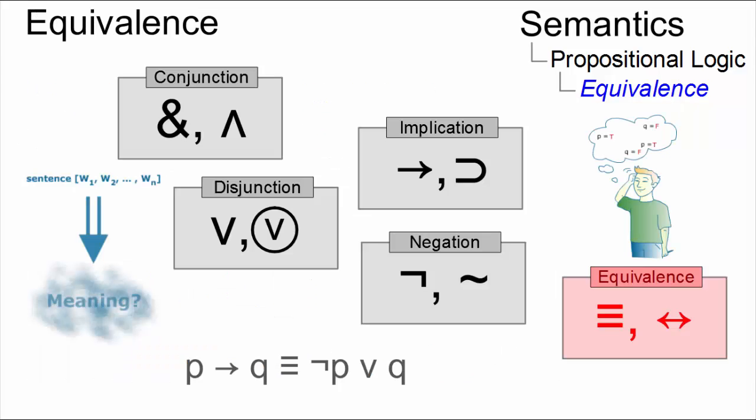Equivalent statements are important for the analysis of sentence meaning because they can freely replace one another without affecting the truth value.